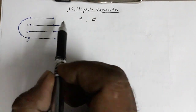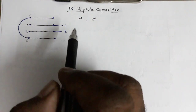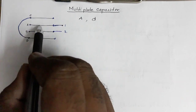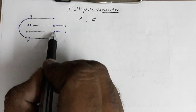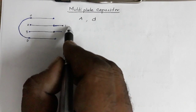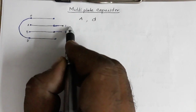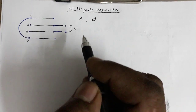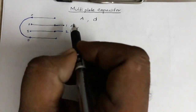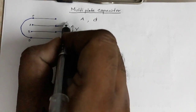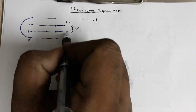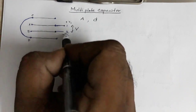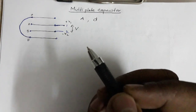Suppose we are asked to calculate the capacitance of this system. We have plate A, plate B, plate C, and plate D. Plate A is connected to terminal 1, plate B is connected to terminal 2, and the applied potential difference is V. This terminal is at potential V1 and the other is at potential minus V2, so the potential difference between the two terminals is V.